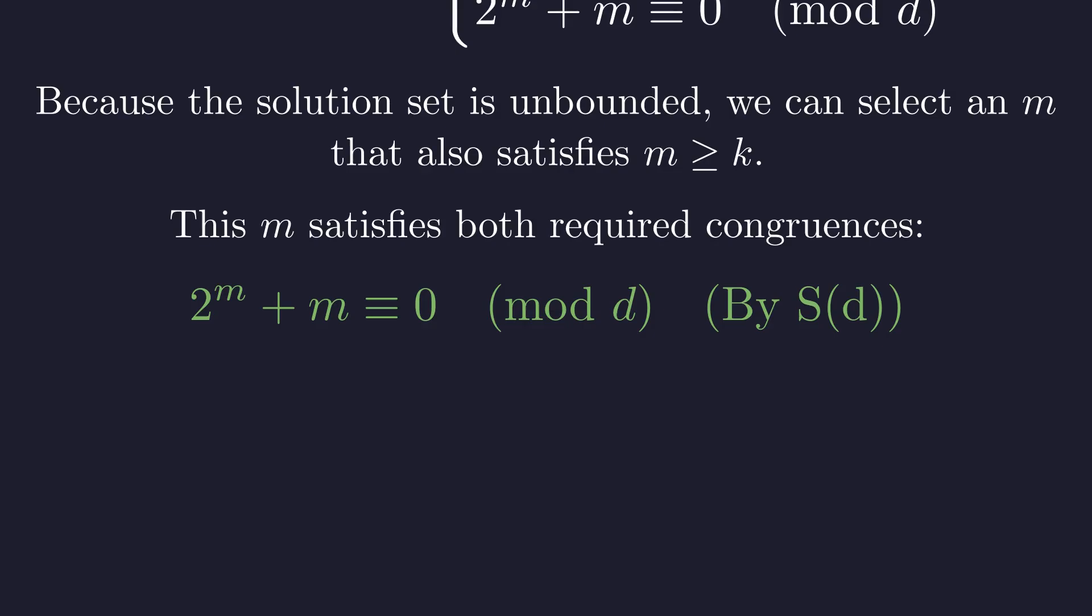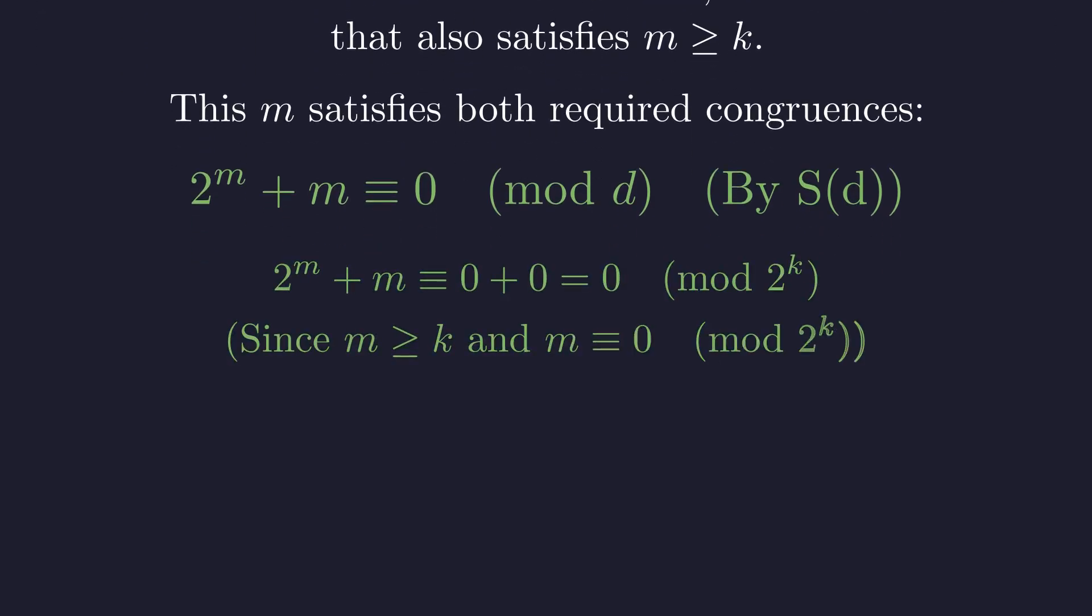The congruence modulo d is satisfied by the claim. And the congruence modulo 2 to the k is satisfied because both m and 2 to the m are congruent to 0. The proof is complete.